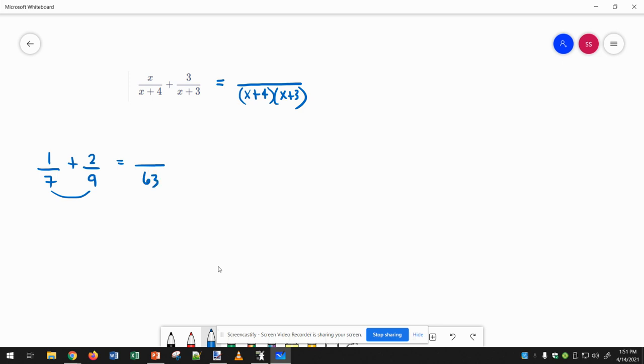Because now I would multiply this number times 9 and this number times 7 to figure that out. So essentially we're doing the same thing here.